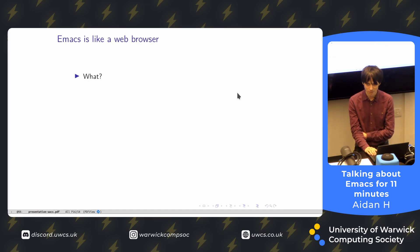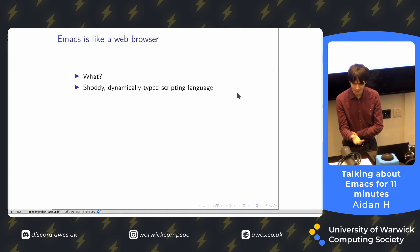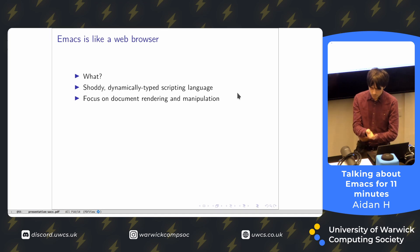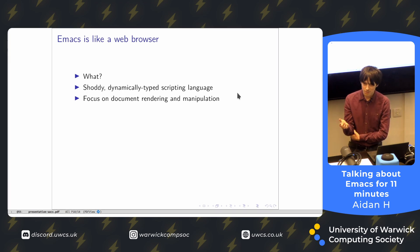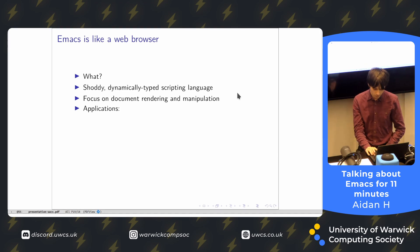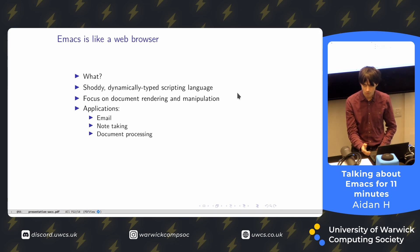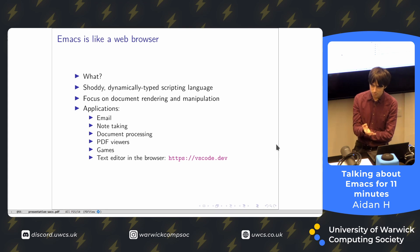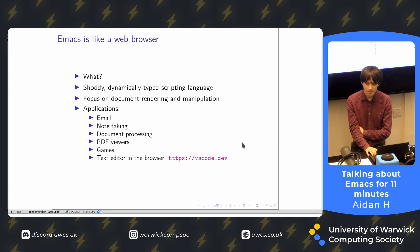I'd like to make the comparison to a web browser. They're both controlled with a shoddy, dynamically typed scripting language — Emacs Lisp is sort of a cheap knockoff of Common Lisp. And both have a focus on rendering documents of some kind: in a web browser that's an HTML document, and in Emacs that's usually a plain text file, maybe in a programming language. You can make pretty much any application in them. People have built email clients, note-taking software, document processing applications, PDF viewers — you can see this is Emacs right now — and games. And even a funny thing: you can get a text editor that runs in your browser; this is VS Code. People have also written web browsers that run inside Emacs. So it's this circular thing.